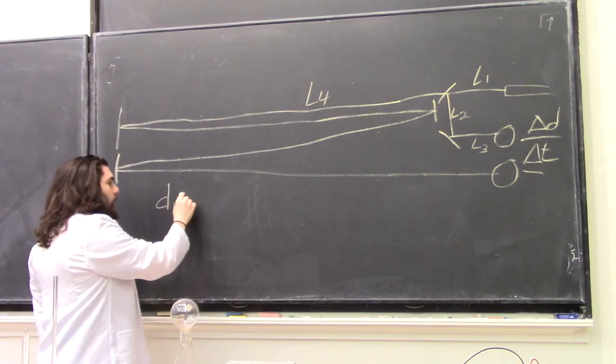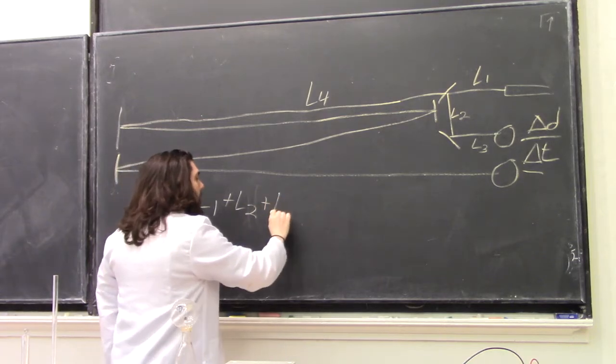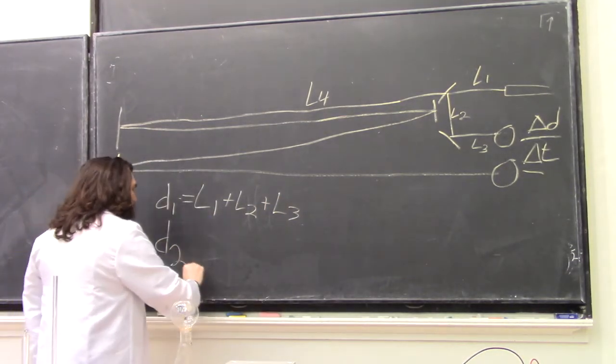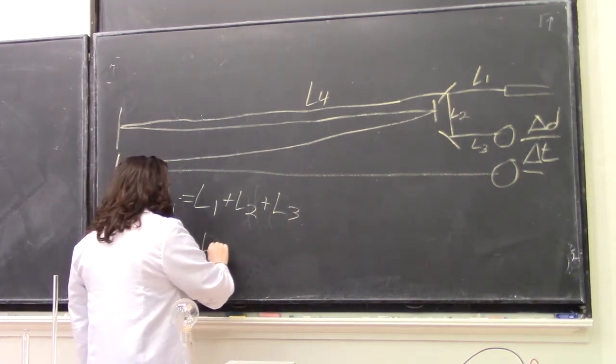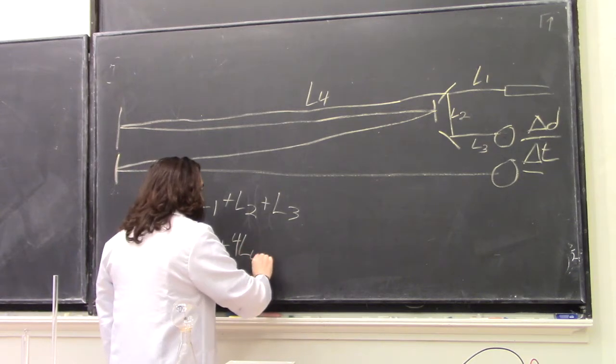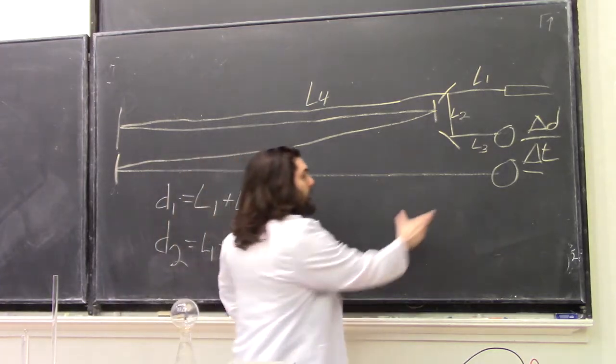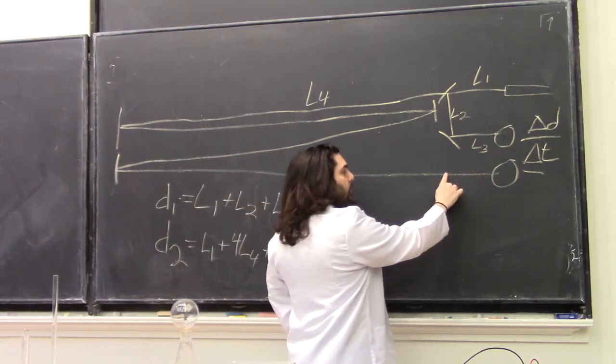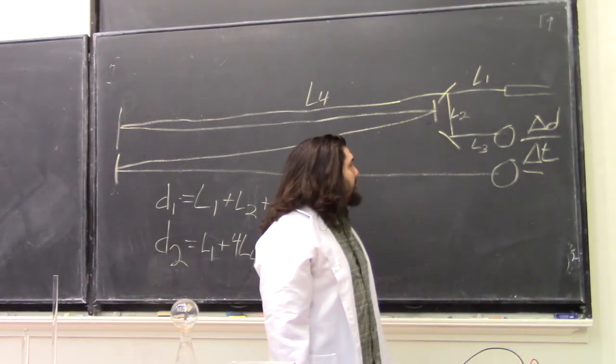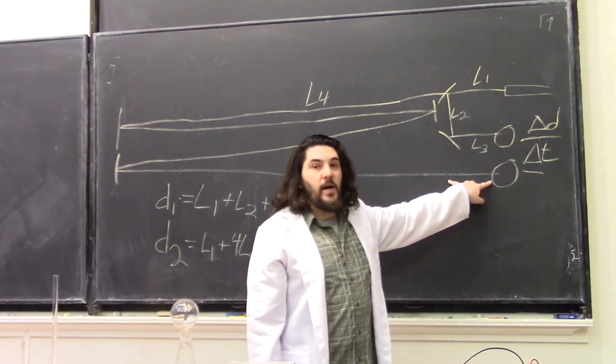Our path for 1 is going to be L1 plus L2 plus L3. Our path for light beam number 2 is going to be L1 plus 4 times L4 plus another L1. That's the distance that it has to travel from here to here. This mirror is approximately in line with L1, as is L3. So this distance here is about another L1.